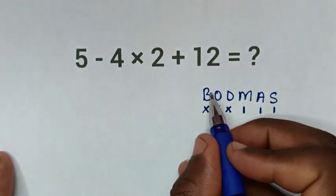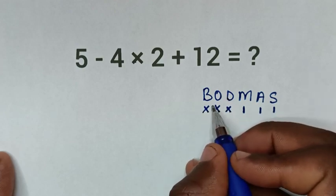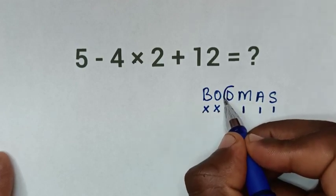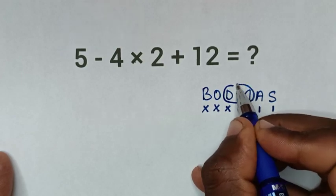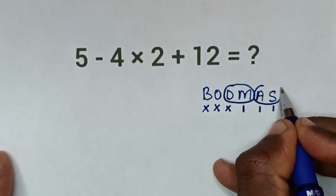Now because we don't have brackets or exponents, we start with division and multiplication first. Then after finishing this group, we'll do the group of addition and subtraction.